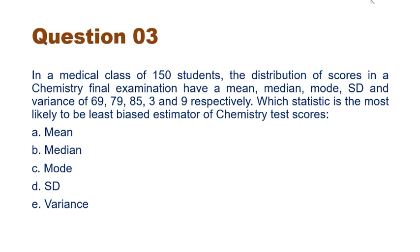Now if we look at mean, median, and mode — these are 69, 79, and 85 — mean is not equal to median, is not equal to mode. So we can say that our data is not normally distributed. And when data is not normally distributed, median is the better measure of central tendency. So the correct answer is option B, median.